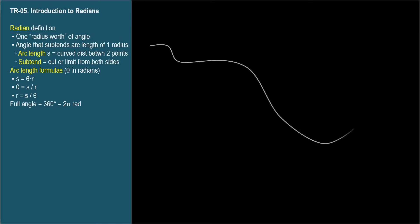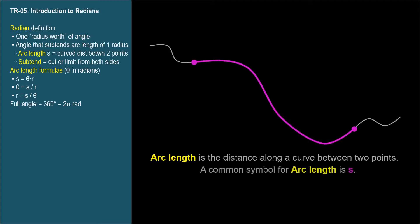Now, for two quick vocabulary words before we provide a more official definition. An arc length is the distance along a curve between two points. A common symbol for arc length is lowercase s, which we'll use in this video series. And the verb subtend means to cut or limit from two sides.